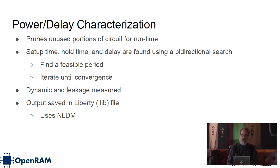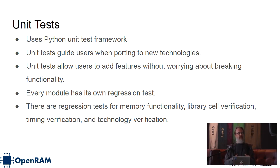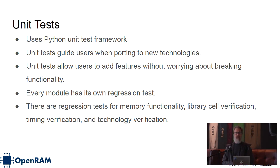One of the most valuable parts of this infrastructure is the verification approach. We started with a set of unit tests that build each component of the memory and do both DRC and LVS, which lets you diagnose where problems are early. This allows people to debug when porting to a new technology or when changing something in the memory. Every module has its own regression test. We also do continuous integration where we run this barrage of tests in both technologies, and we're adding tracking of power, performance, and area over time to see how OpenRAM improves.